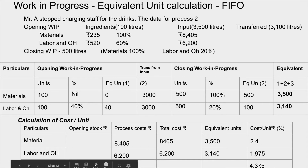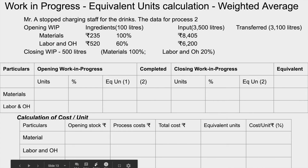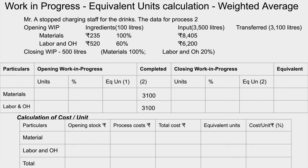Total cost per unit is calculated by combining material and labor cost per unit. Under weighted average method, we do not separate opening WIP from current process output. Instead, 3,100 units are directly taken as transferred output. Closing WIP is 500 liters: materials 100% complete, labor 20% complete — giving 500 equivalent material units and 100 equivalent labor units.